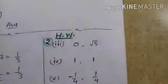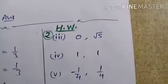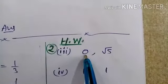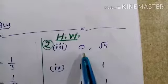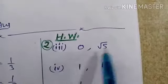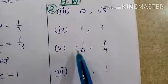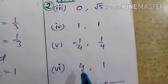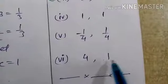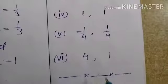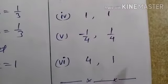Now some questions for homework: the 3rd, 4th, 5th, and 6th parts. For the 3rd part, sum of zeros is 0 and product is root 5 — write 1 in the denominator and compare. For the 4th part, both denominators are 1, so write 1 and compare. For the 5th part, denominators are the same so directly compare both sides. For the 6th part, write 1 in the denominators and compare the sum and product of zeros, i.e., minus b by a and c by a.